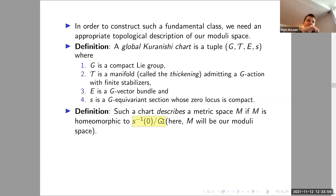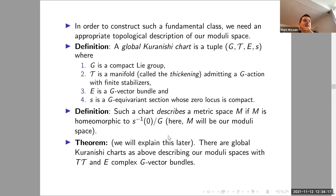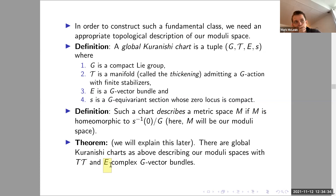So a moduli space is the zero set of a G-equivariant section modulo G. One of our theorems is that there exist global Kuranishi charts describing our moduli spaces, and we want the additional property that the tangent space of T and also E are complex G-vector bundles. Assuming this structure, I want to put a virtual fundamental class on M.